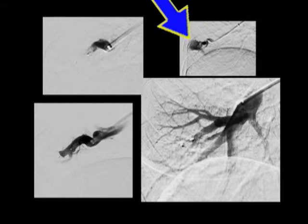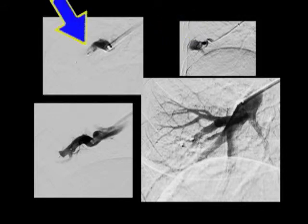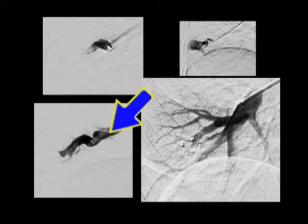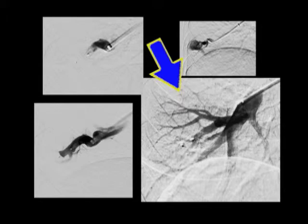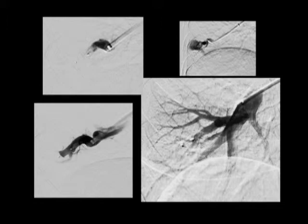There was the AVM, and here is the blockage — you can see it's nicely blocked. The contrast comes there and doesn't go any further. Here's a finished film showing no longer that big round thing which allowed the connection between the artery and the vein.